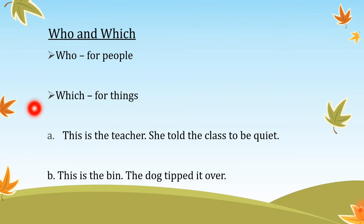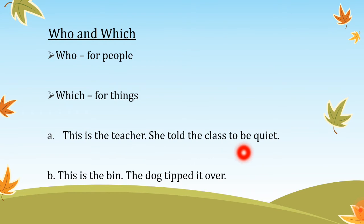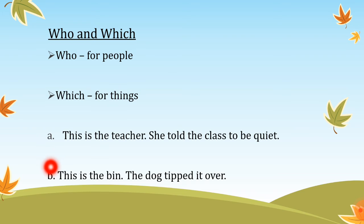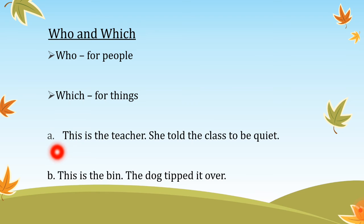The first sentence is: 'This is the teacher. She told the class to be quiet.' As the teacher is a person, we use 'who' to connect the sentence, so it becomes: 'This is the teacher who told the class to be quiet.' The second sentence is: 'This is the bin. The dog tipped it over.' Since the bin is a thing, we use 'which': 'This is the bin which the dog tipped over.' That was all for today. Thank you very much, stay safe and blessed.